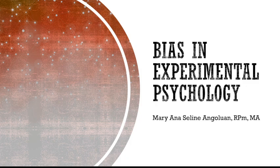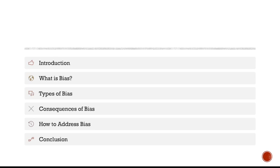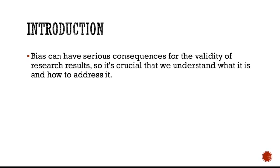Please know that there are a lot of biases in different kinds of research, but what I'm going to discuss are the ones that are very important in doing experimental research. So let's start with the introduction. We're going to define what bias is, the different types of bias, the consequences of having bias in your research, and how to address it. Bias has serious consequences on the results of your study, specifically on the validity of your study.